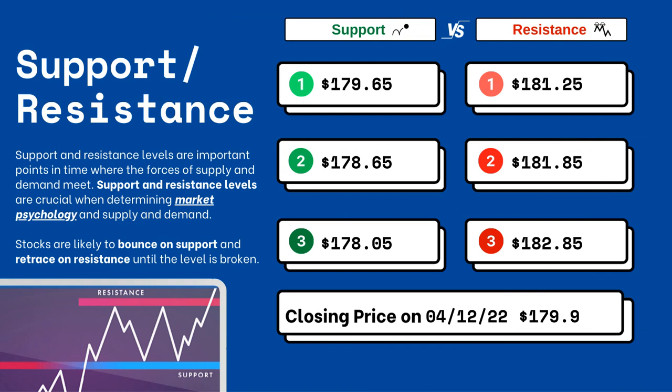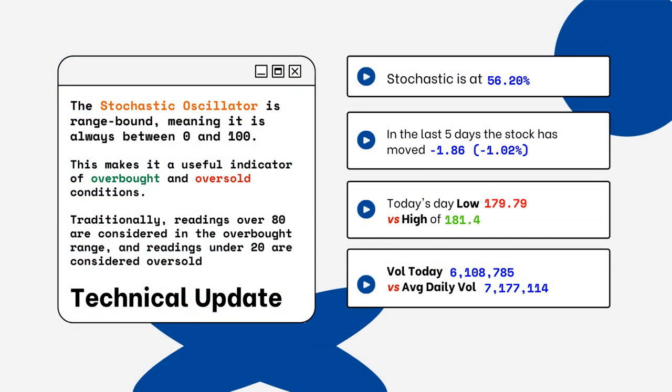Support and resistance levels are very important because they let you know where supply and demand are meeting. On the right side you'll see three support levels and also three resistance levels. These are areas that you want to watch when looking at this particular stock. Stocks typically bounce at support levels and resist at resistance levels, meaning they'll retrace from that top level.